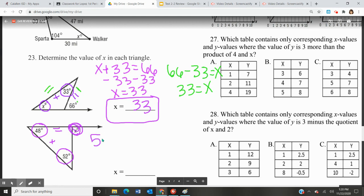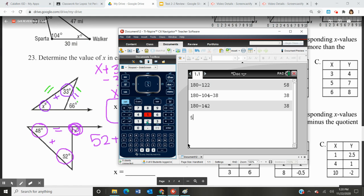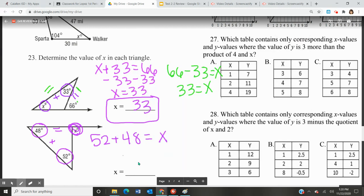So 52 plus 48 equals x. Whenever I put that in my calculator, 52 plus 48, that equals 100. So x here equals 100.